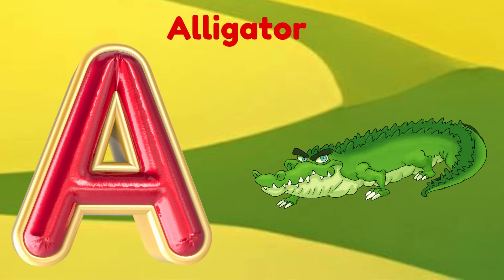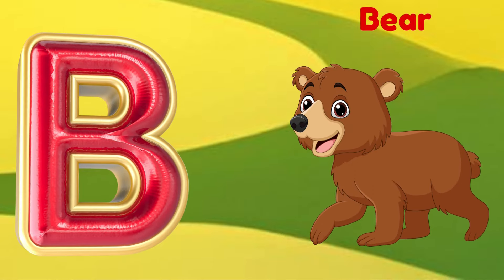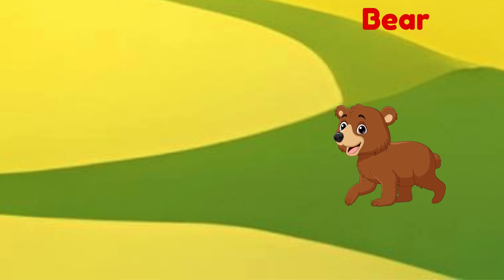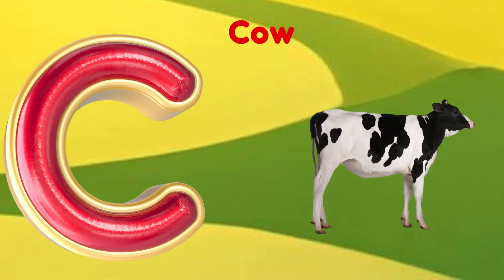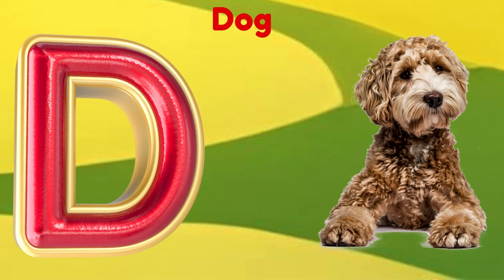A is for Alligator. A, A, Alligator. B is for Bear. B, B, Bear. C is for Cow. C, C, Cow. D is for Dog. D, D, Dog.